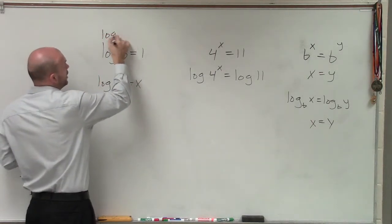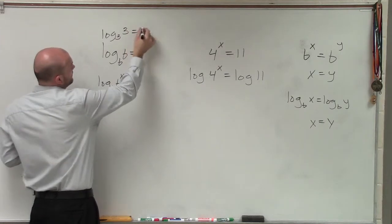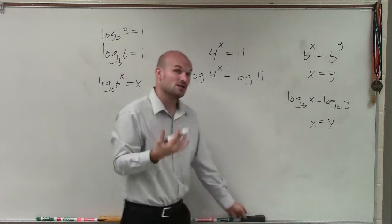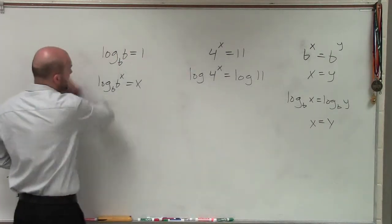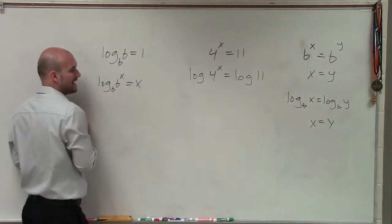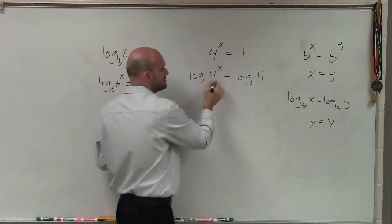That means if I had log base 3 of 3, that answer is 1. Because 3 raised to what power gives you 3? We know the answer is 1. The other property of logarithm states that if I had log base b of b raised to a power, that's just going to equal x, that power. So what I need to do is I want to solve for this x.